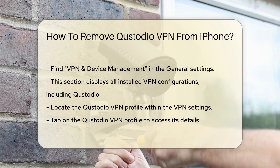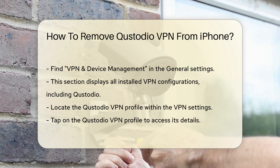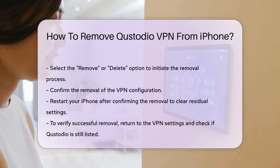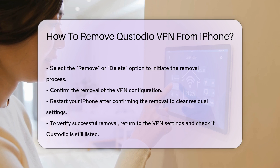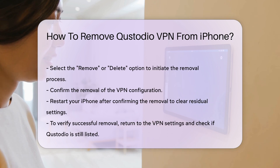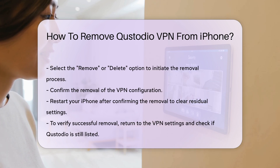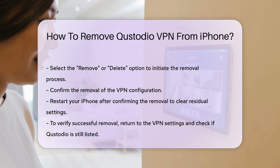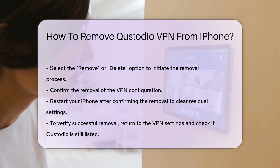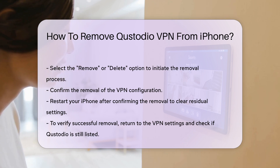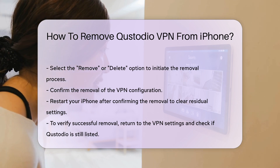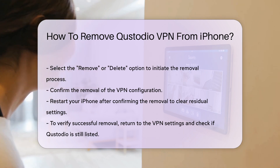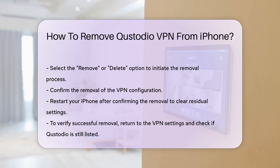After confirming the removal, it's advisable to restart your iPhone. This step ensures that any residual settings are cleared from the device. Once your iPhone has rebooted, you can verify the removal by returning to the VPN settings to ensure Custodio is no longer listed.